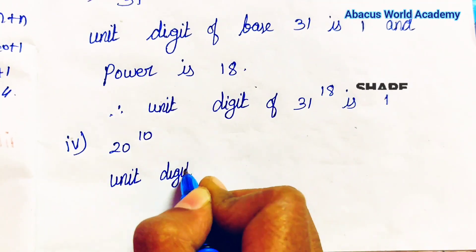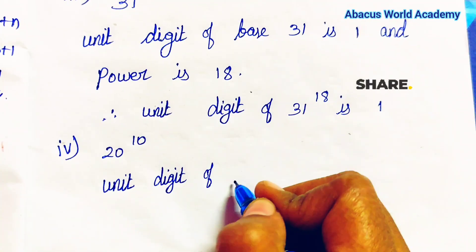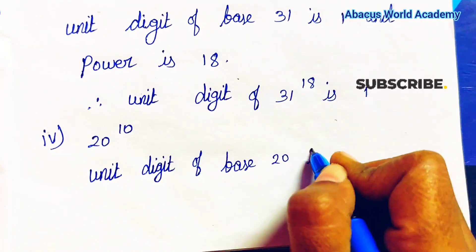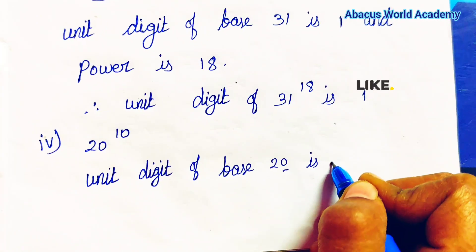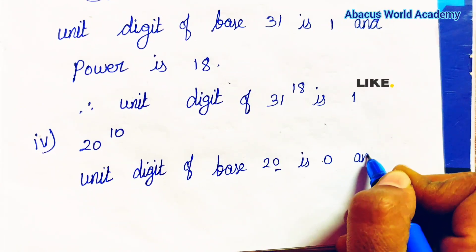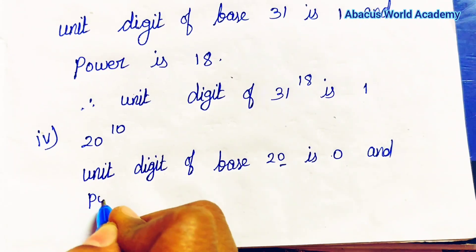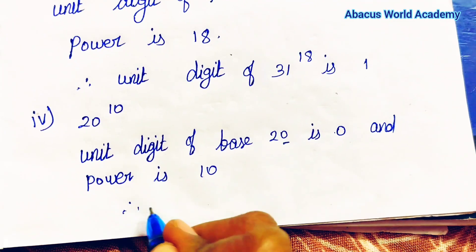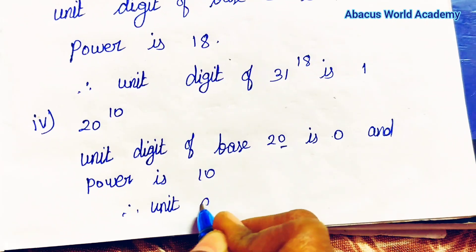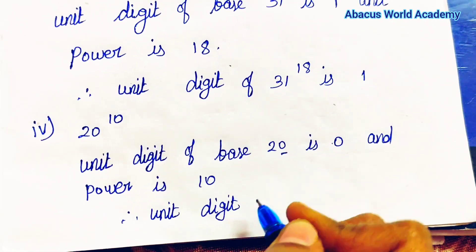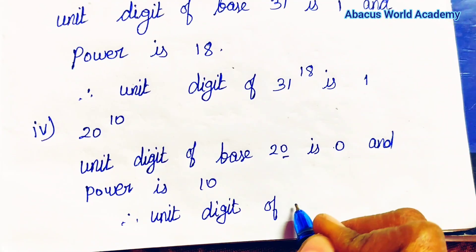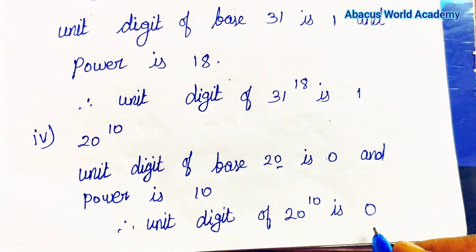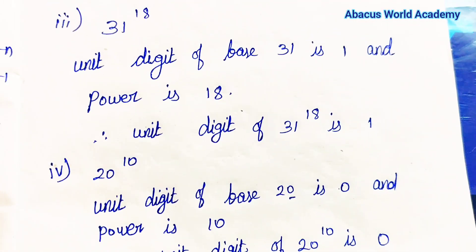Unit digit of base 20 is 0, and power is 10. Therefore, unit digit of 20 to the power 10 is 0. This is the answer.